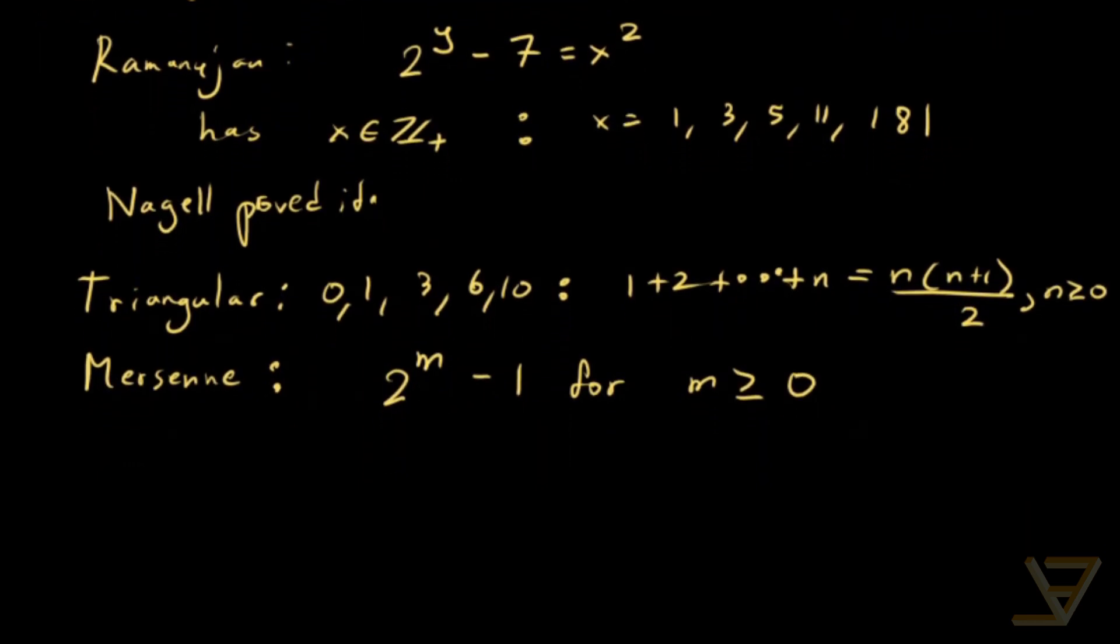And our task today is to find all solutions, all integer solutions to the equation 2 to the m minus 1 is equal to n times n plus 1 over 2.